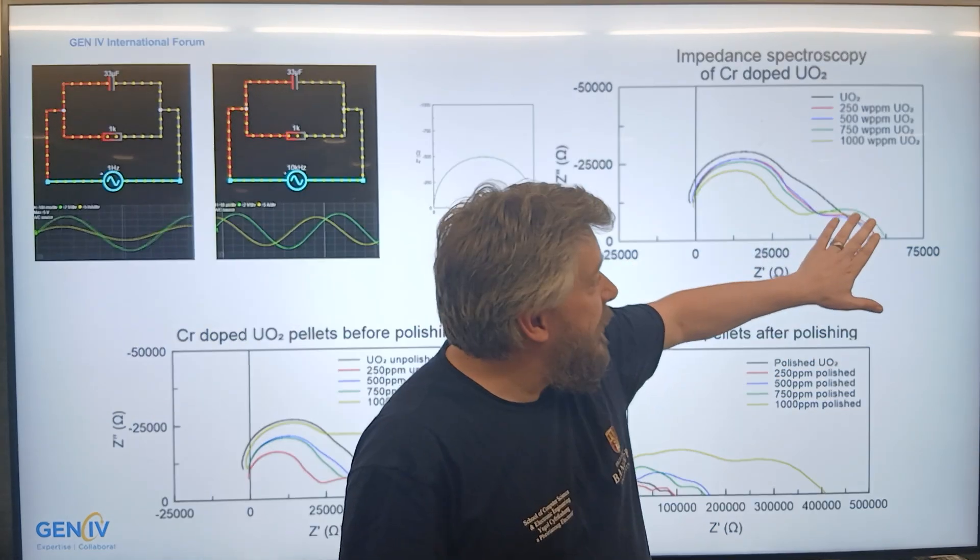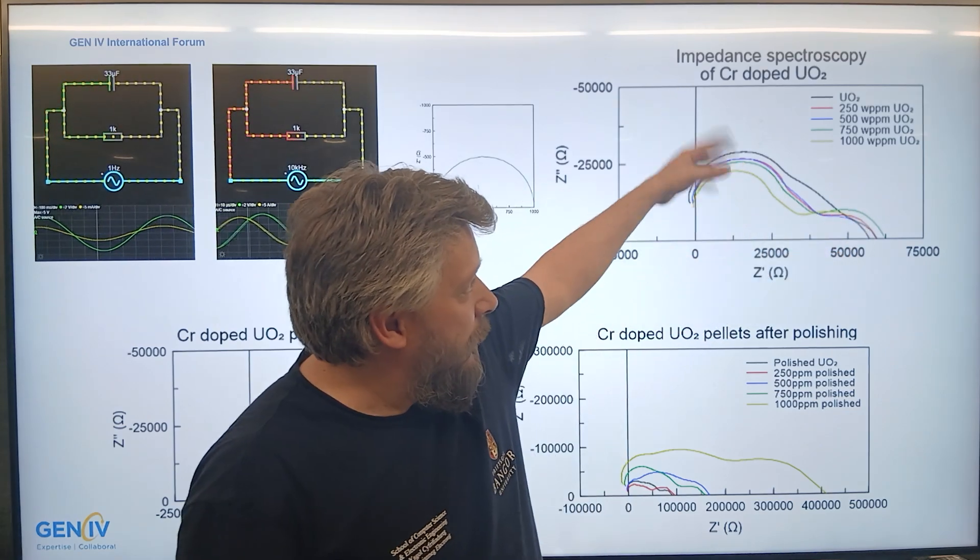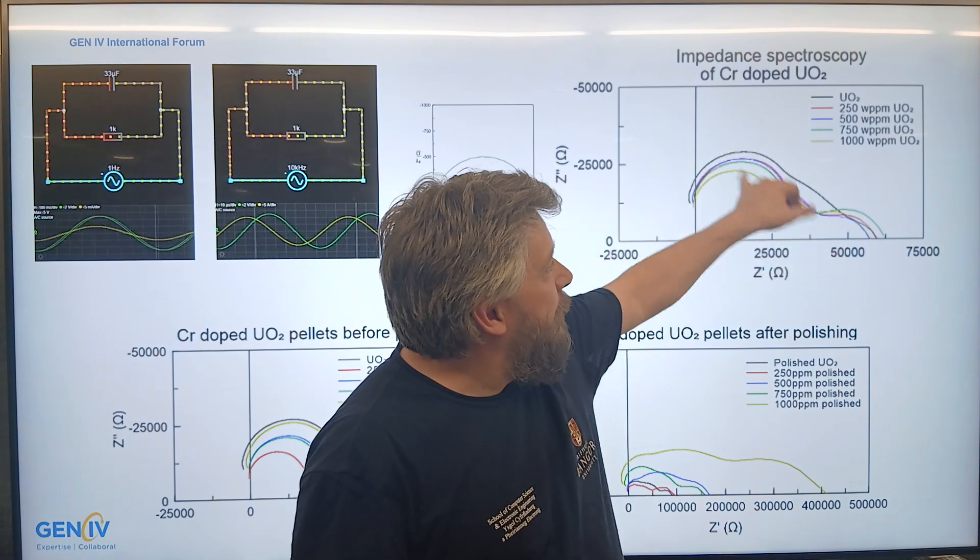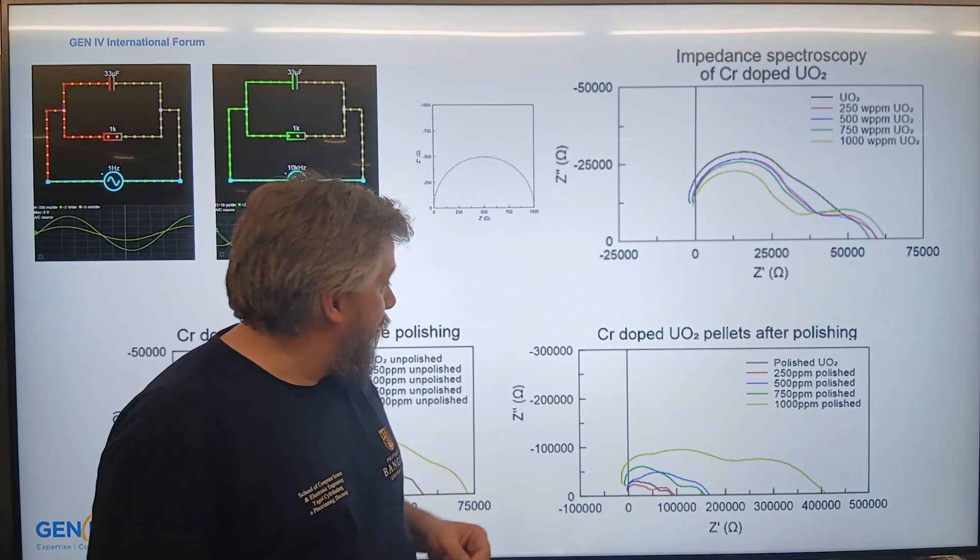And what's fantastic about this is we can characterize each one individually. And as you see on the graph we've got various amounts of chrome built into the material, taking various measurements of it to determine the grain size.